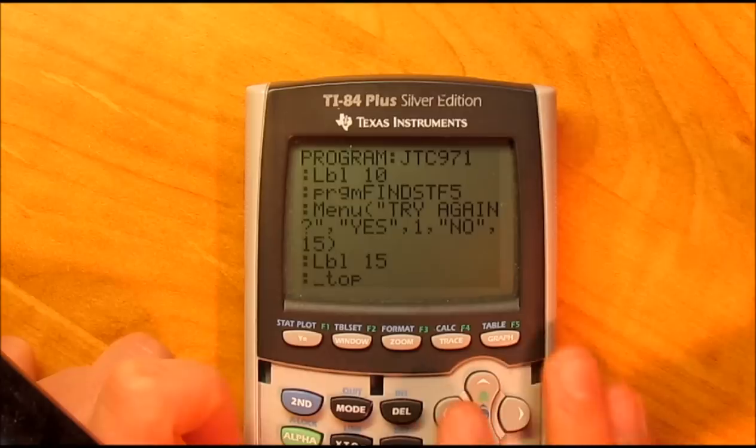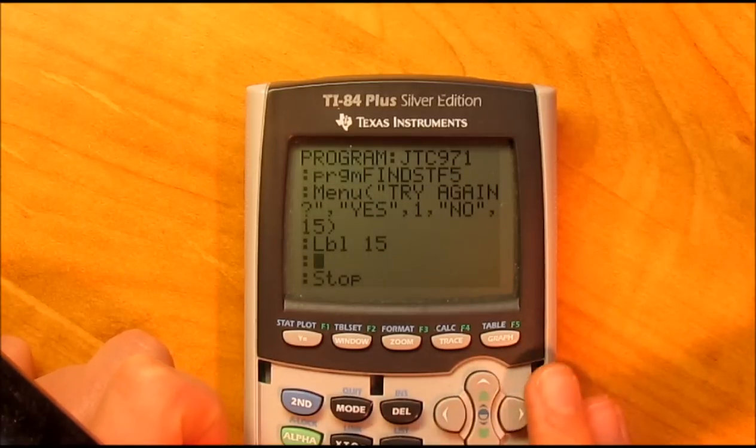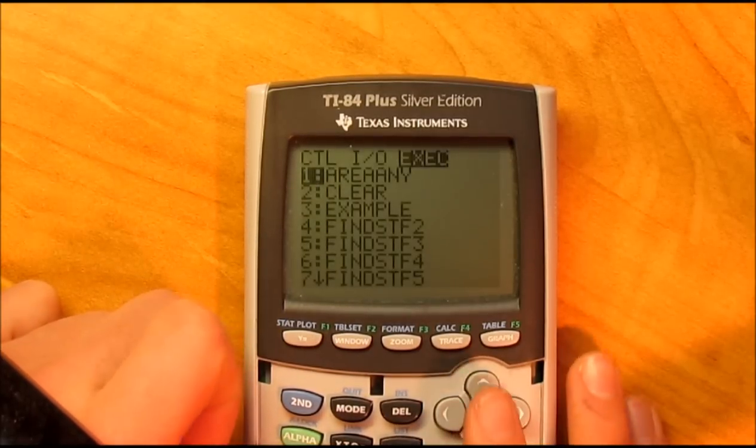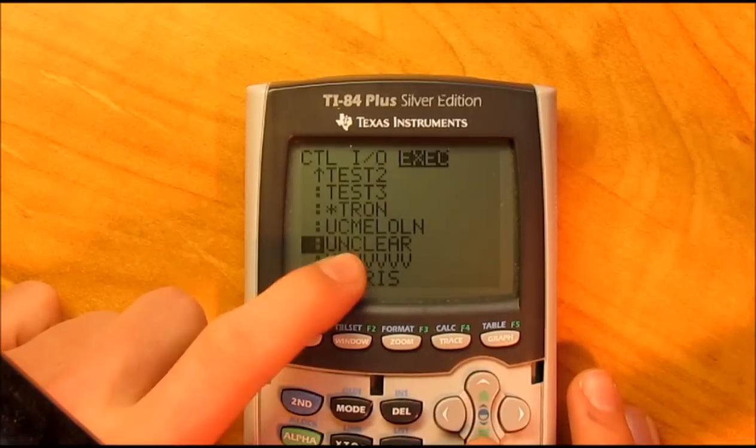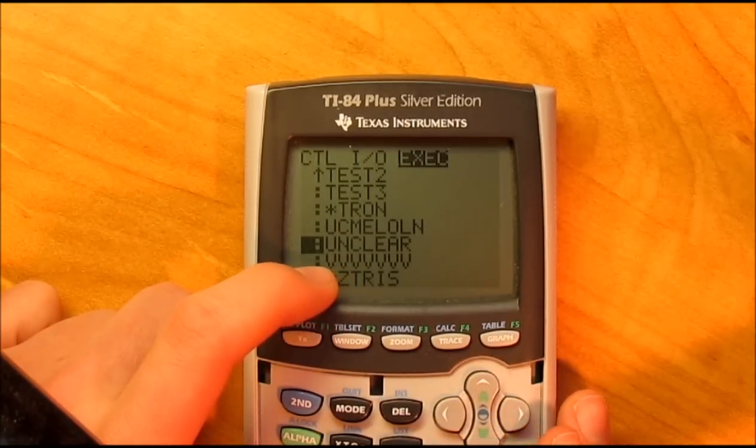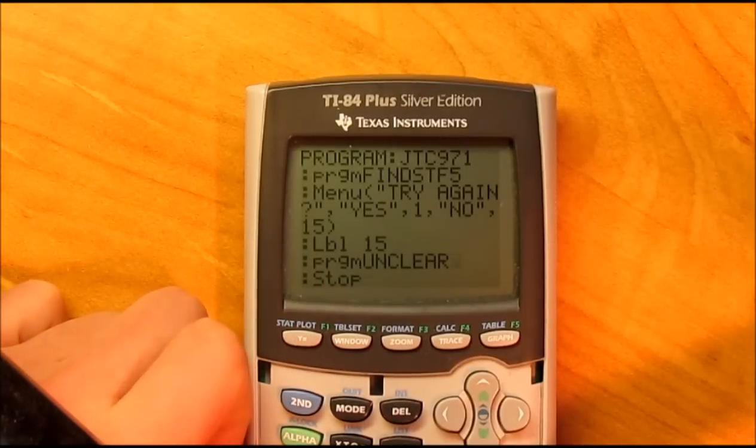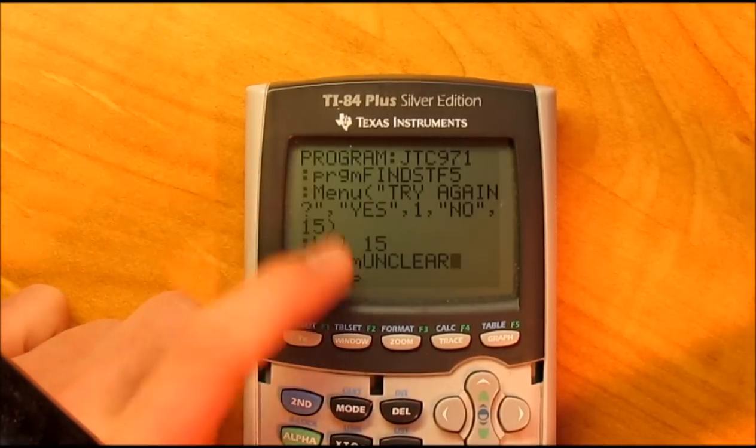Here's the example of how to get to your programs. You hit program, scroll over to the right, and then find the one you were looking for. I'm looking for unclear, hit enter and plop it right in there. So label 15, unclear, stop, and that's it. That's all there is to it.